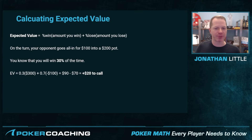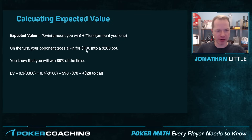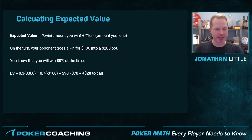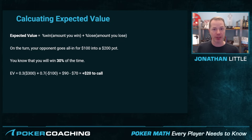Say on the turn your opponent goes all in for $100 into a $200 pot, and let's presume that you know your hand is going to win against your opponent's range 30% of the time. Our expected value is 30% times $300 — that's the amount we win, the $200 pot plus our opponent's $100 bet — plus 70% of the time we lose $100. So we solve for this: we have $90 minus $70, which equals $20 profit to call. That means that even though we're only going to win 30% of the time, we are going to make $20 on average every single time we make this call.